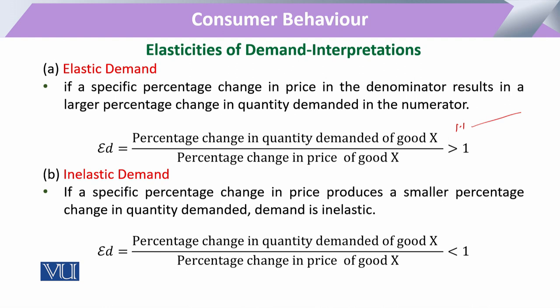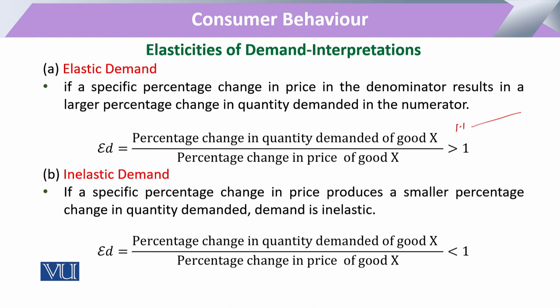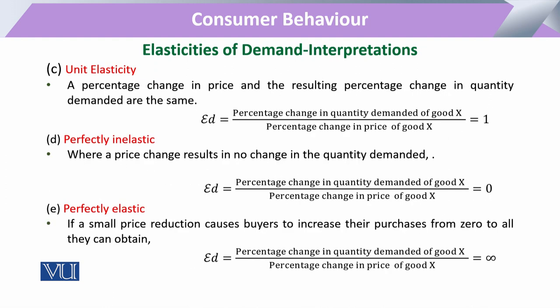Looking more clearly at elastic and inelastic demand, there are some clear-cut threshold points. When we determined that elasticity is less than 1 or greater than 1, there is a threshold level between them that equals 1. When the percentage change in price causes a percentage change in quantity demanded such that the responsiveness remains constant and equal to 1, that is called unit elastic demand.